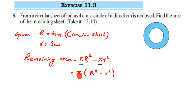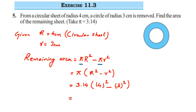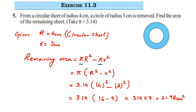So substituting: pi = 3.14, capital R = 4, small r = 3. Remaining area = 3.14 × (4² − 3²) = 3.14 × (16 − 9) = 3.14 × 7 = 21.98 square centimeters. Notice I only had to multiply 3.14 once, which saves calculation steps.